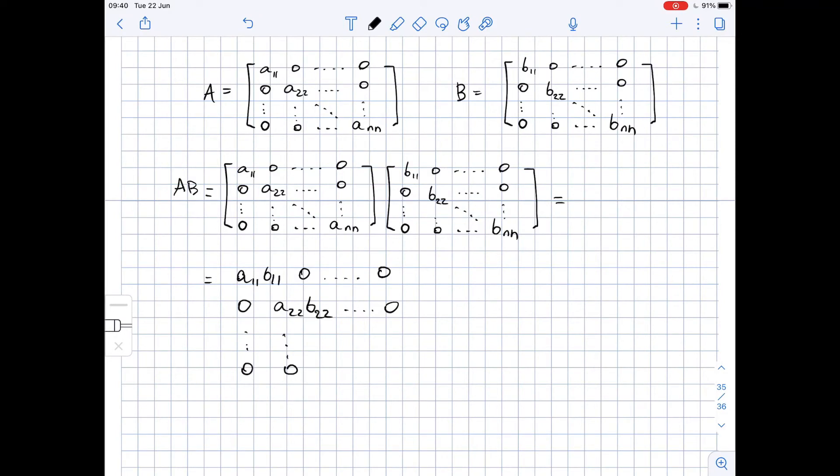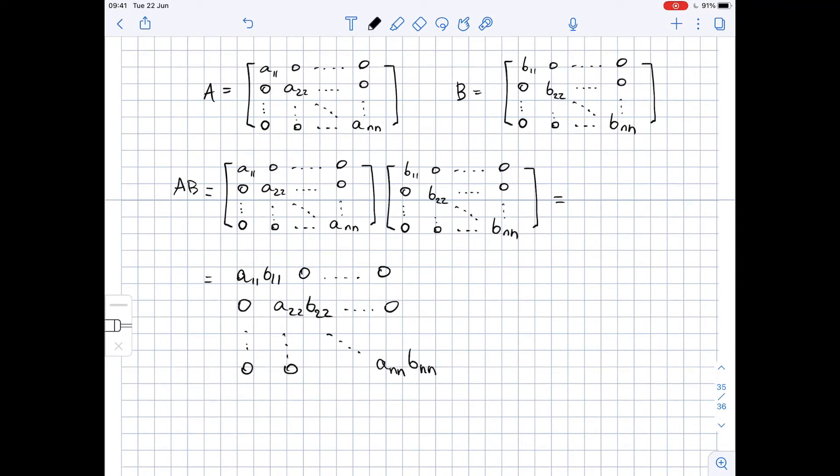Then here the rest are zeros, here the rest are zeros. Here the rest are the product of corresponding A and B entries. So here we have AₙₙBₙₙ, zeros, zeros, zeros. Well, so this is the product of AB.